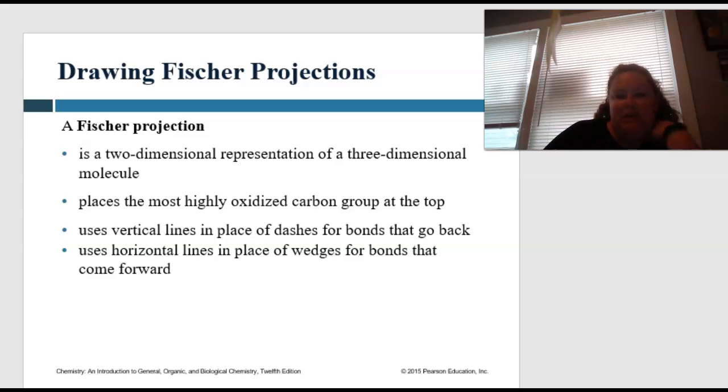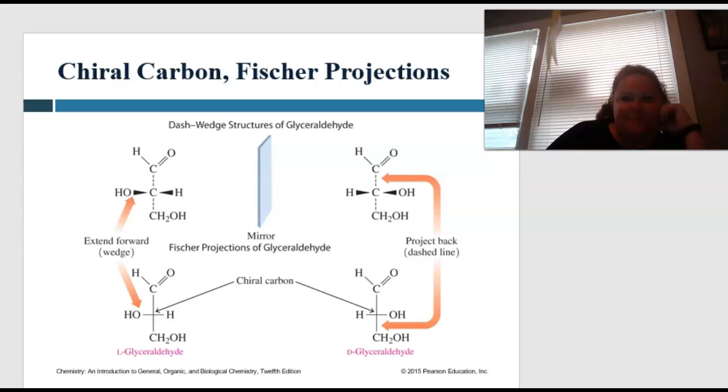So depending on if it is going to be a dash, dashes go backwards, so horizontal lines are going to go forward. So let's look and see what this is going to look like. This is an example. So again, this is going to be very rare to see if it's chiral, right? This wedge is showing you that it's coming forward towards you, where the dashed line is going to be projecting back.